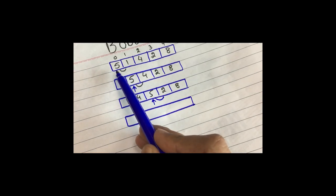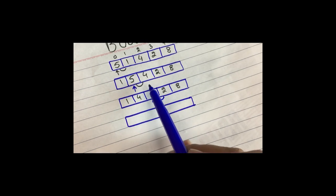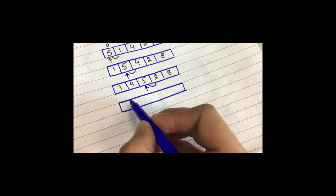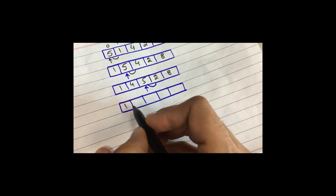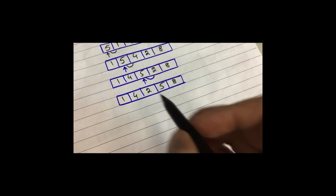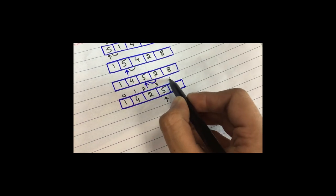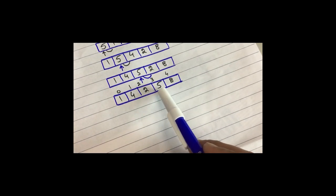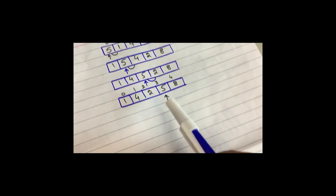In bubble sort, starting from index zero we compare and move the counter. If a swap occurs, or if no swap occurs, we move the counter to the next step. This process continues until the counter reaches the last element of the array. Now 1 is in position, 4 is in position, then swapping gives 2 first then 5, then 8. Finally we compare 5 at index three with 8 at index four — since 5 is less than 8, it is already in correct position so no swap occurs.